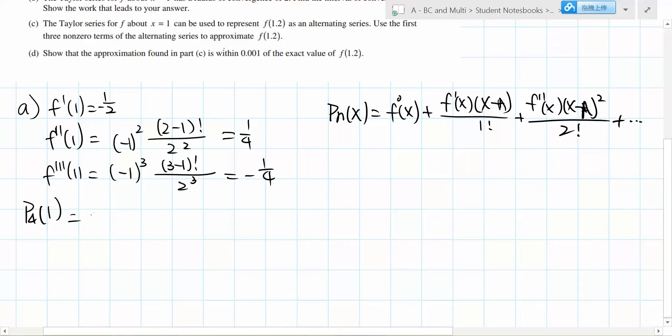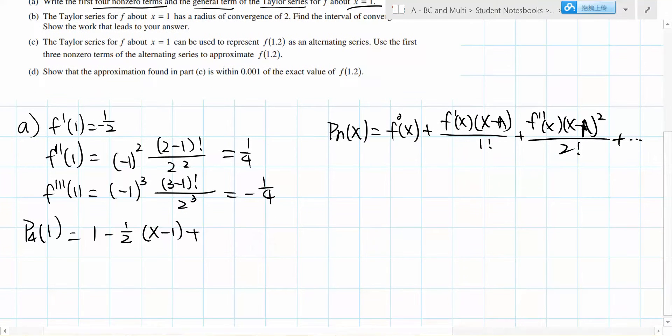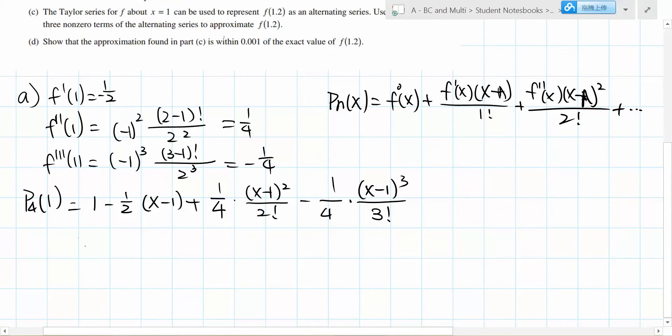In this formula, f(1) equals 1, and I already have f'(1) which is negative 1/2. It's centered about x equals 1, so it will be (x-1). Then I plug in the values I calculated. This gives the first four non-zero terms, which I'll simplify.